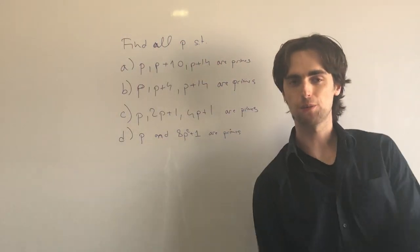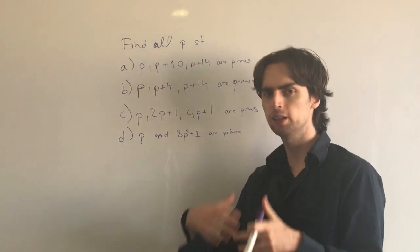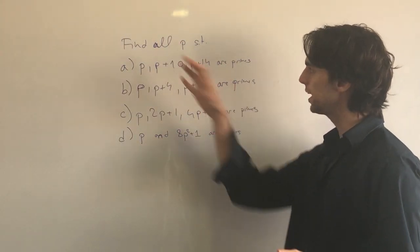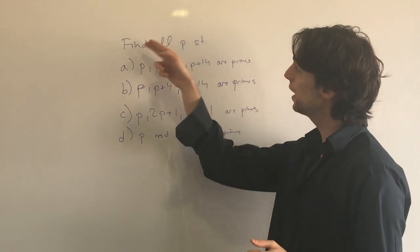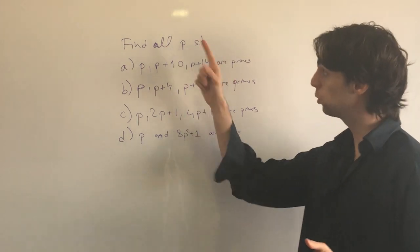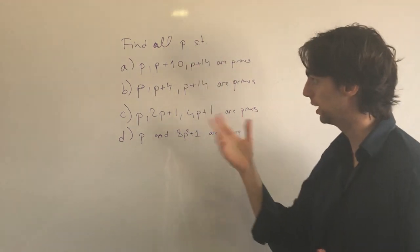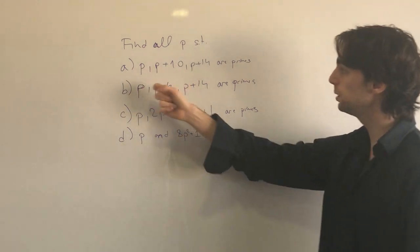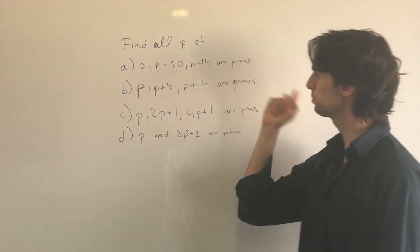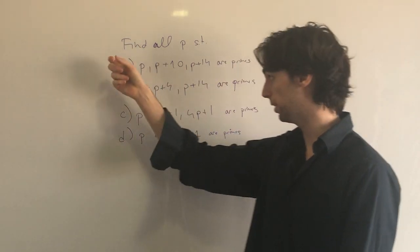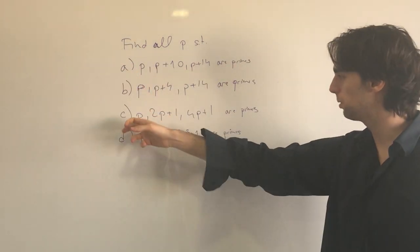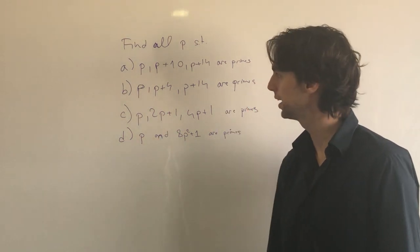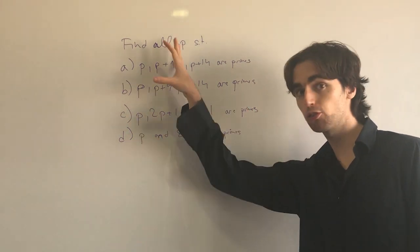Hello fellow problem solvers. We're going to be doing some number theory technique. The problem says: find all primes P such that P, P plus 10, and P plus 14 are all primes. This is part A, part B, part C, part D — all separate. I invite you to try out every single one of these.